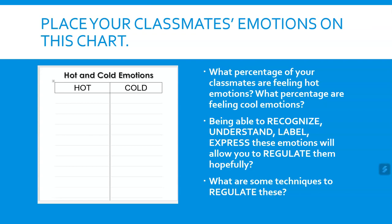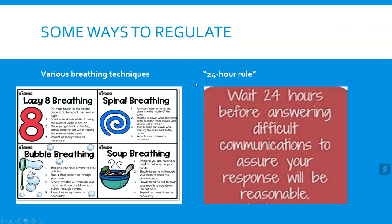I want to give you a couple of techniques to regulate — the R in RULER. There are many different breathing techniques: lazy eight breathing, spiral breathing, soup breathing, bubble breathing. The reason why breathing helps is it slows things down. You can control your breath, and it can calm your body if you're feeling in a heightened emotional state. Explore different techniques, because breathing does work.